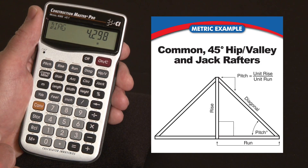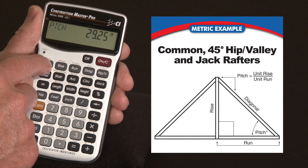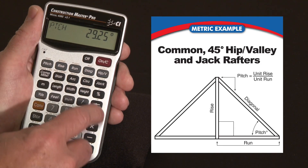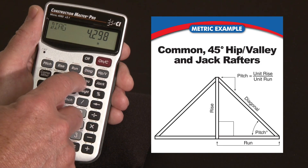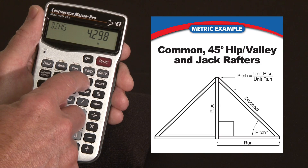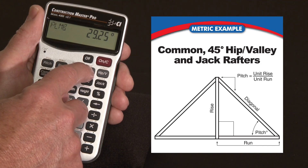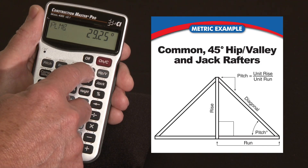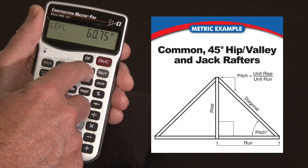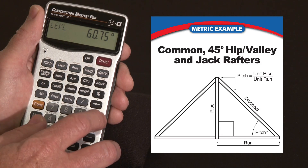You can also see the pitch. This is a 29.25 degree roof. Also with the common rafter, it gives you the cuts — so a plumb cut is going to be 29.25 degrees, and the level cut is going to be 60.75 degrees.